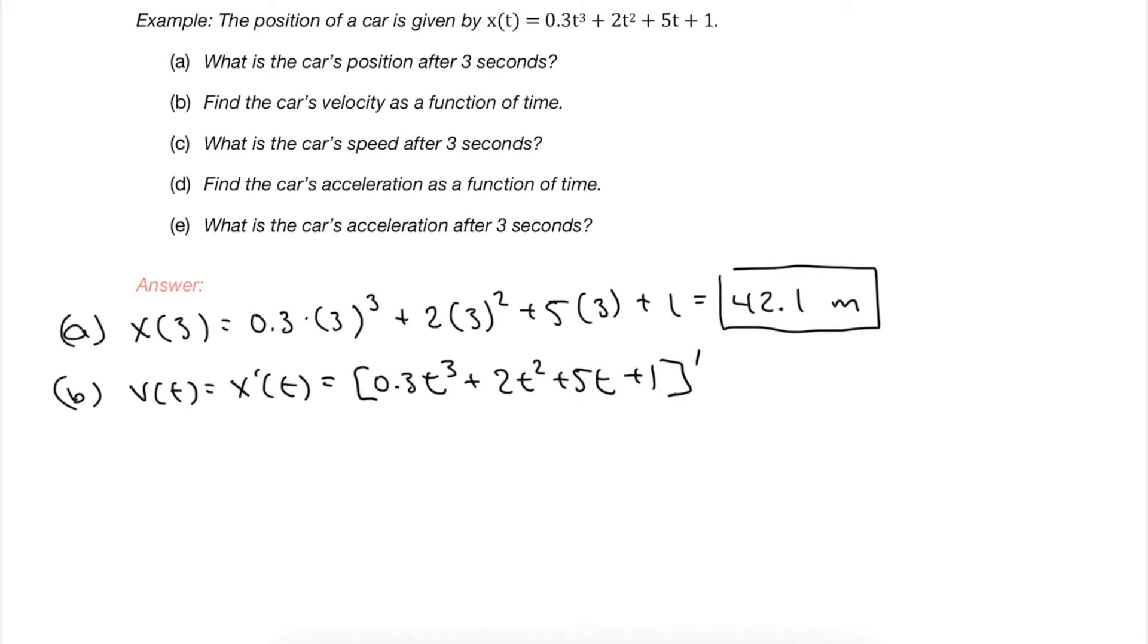We're going to take our exponent, turn it into the coefficient, and then drop our exponent by 1. That's exactly what we would do here just like in a calculus class. When we simplify, we get the answer.